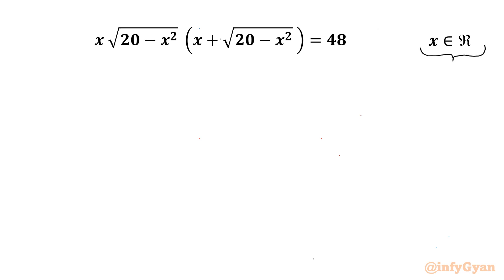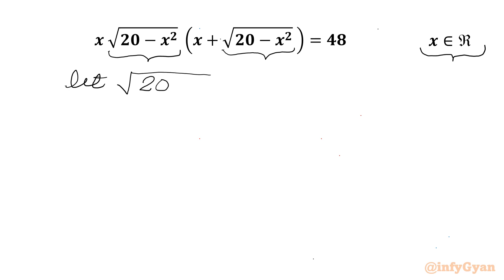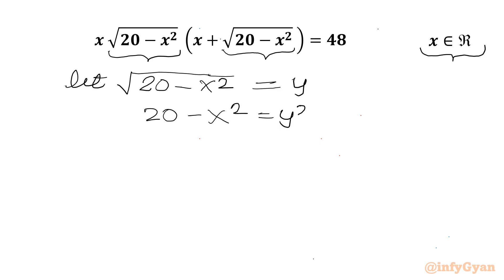As we can see, square root of (20 minus x squared) is present in our equation. So we will take the obvious substitution: square root of (20 minus x squared) equal to y. Squaring both sides gives 20 minus x squared equal to y squared. After rearranging terms, x squared plus y squared equals 20.